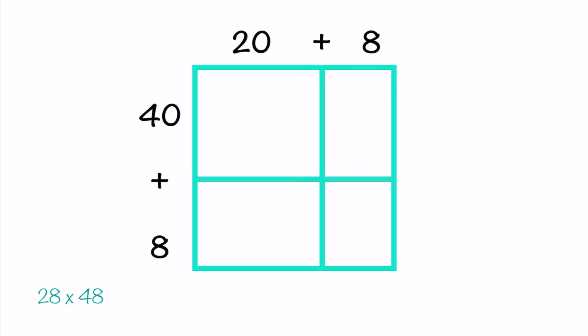Now, everywhere you see a plus sign, put a line. Then we multiply the length and width of each box — a.k.a. the corners — like this. Corner one, corner two, corner three, corner four.